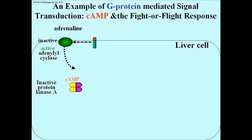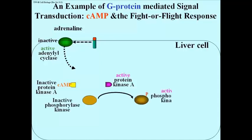Two molecules of cyclic AMP bind to an inactive protein kinase — a four subunit protein — which then dissociates. The cyclic AMP bound subunits, shown in yellow in this cartoon, are not the active enzymes. But the other subunits, shown in purple, that have come apart from the tetramer are now each active protein kinases that can catalyze phosphate transfer from ATP to some target protein, which they do.